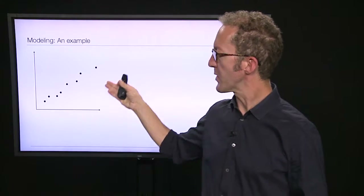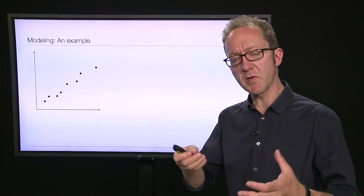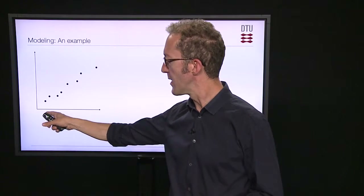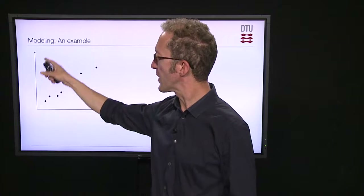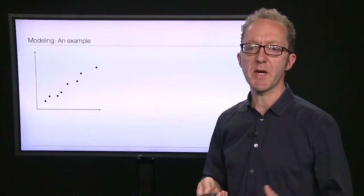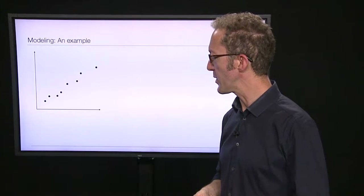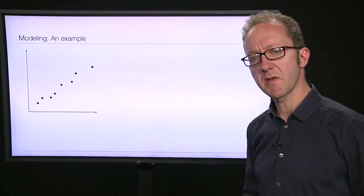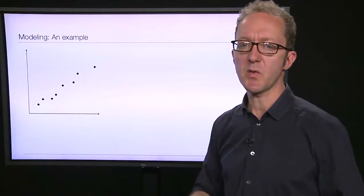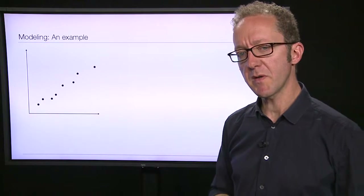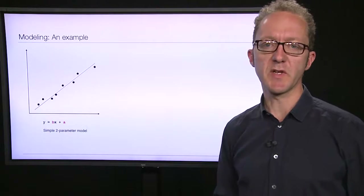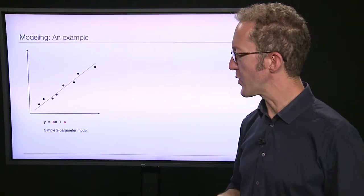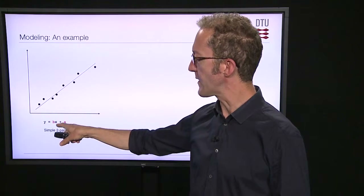Imagine that we have collected some data from some system that we're looking at, giving us some x and y values we can show in a scatter plot. It might, for instance, be the blood sugar level and the resulting expression of some gene — the mRNA level of some gene, maybe insulin or whatever. Under all circumstances, we're looking at a system, collecting data, and it shows this relationship between x and y. A reasonable hypothesis about these data is that there's a roughly linear relationship, which expressed as a mathematical equation is y equals b times x plus a.